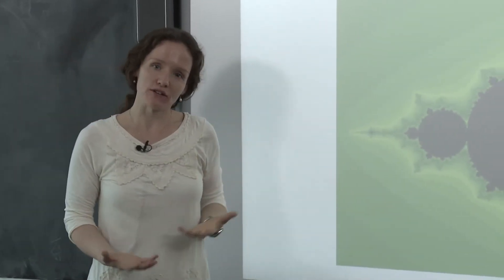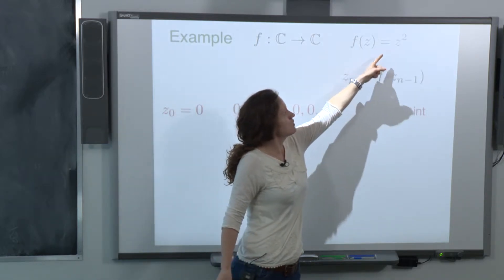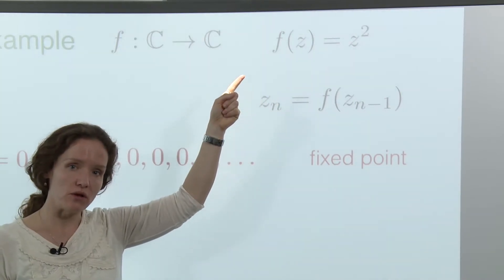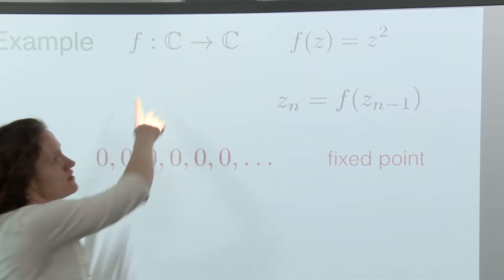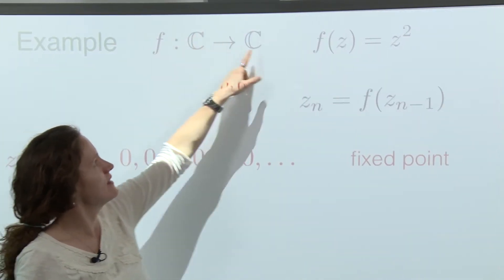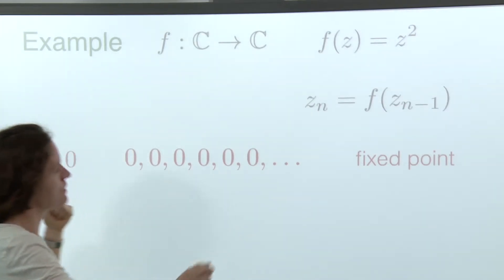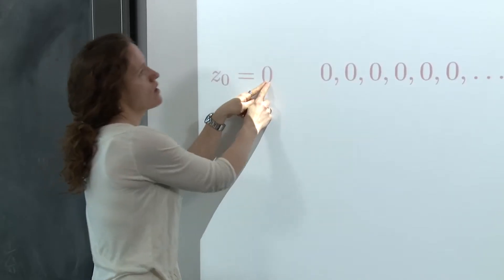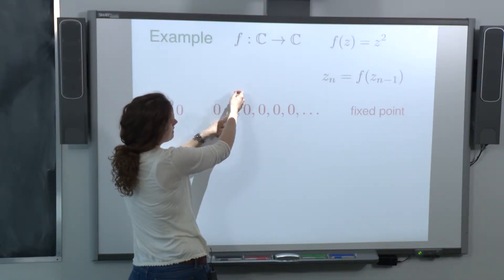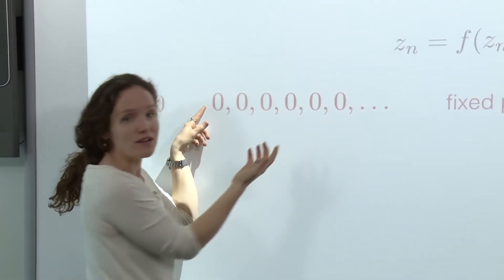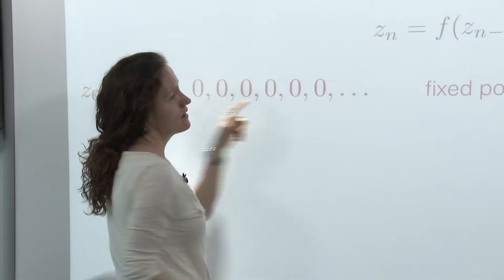The Mandelbrot set arises in dynamical systems. We consider a polynomial like f(z) = z squared, where z is a complex variable. This function takes a complex number z and returns z squared. Since the domain and range are the same, we can plug z in, get z squared back, then feed that output back into the function again, generating a sequence. For instance, if z naught is zero, plugging it in gives zero squared which is zero — a boring sequence of zeros. Zero is a fixed point of this function.